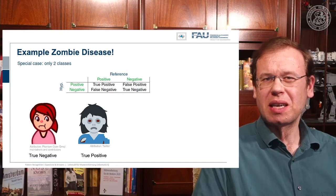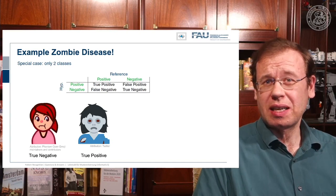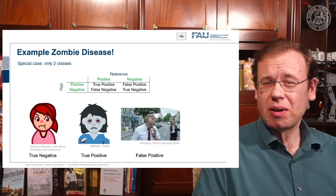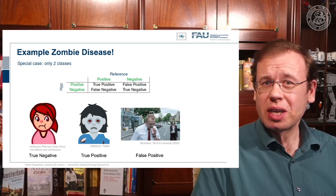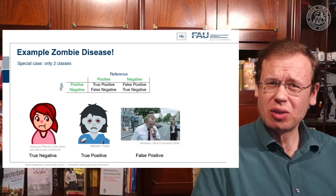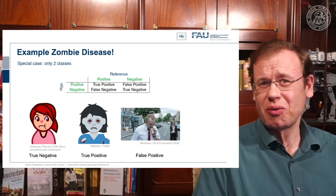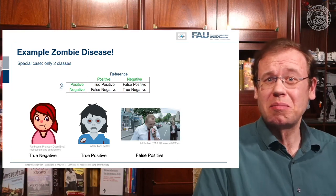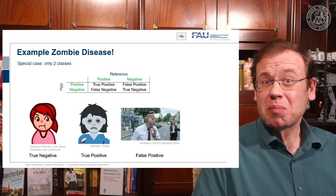Our classification system can also make mistakes. Sometimes we detect somebody as a zombie who isn't actually a zombie. I brought a small example to help you memorize this — from the horror movie Shaun of the Dead. In the scene, Shaun had a really bad hangover and goes out to the shop to buy a drink. He's so severely hungover that he doesn't realize all the walking dead around him, and they don't recognize him because he behaves like one of them. So this would be a false positive.